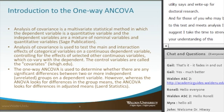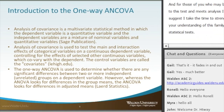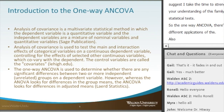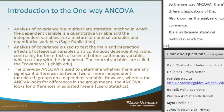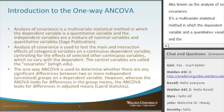The one-way ANCOVA, also known as the analysis of covariance, has a few different applications. It's a multivariate statistical method in which the dependent variable is a quantitative variable and the independent variables are a mixture of nominal variables and quantitative variables. That's the definition from Sage Publication.